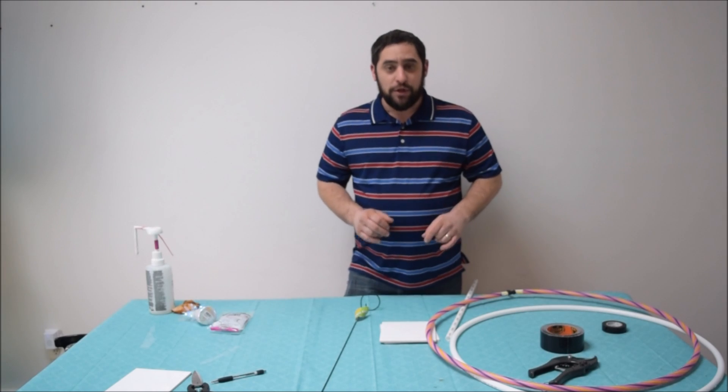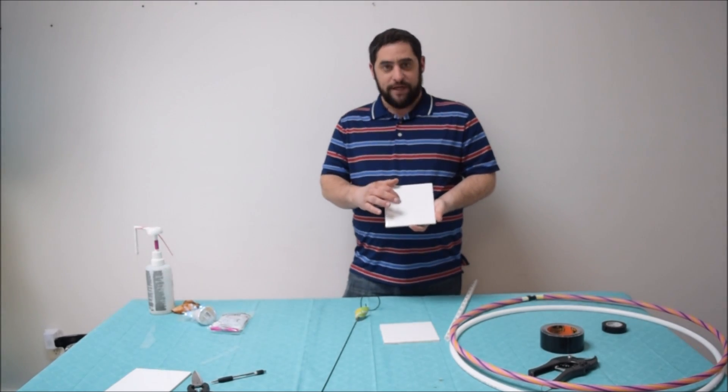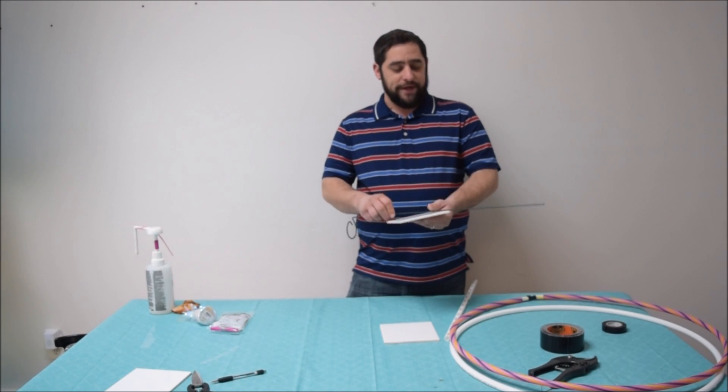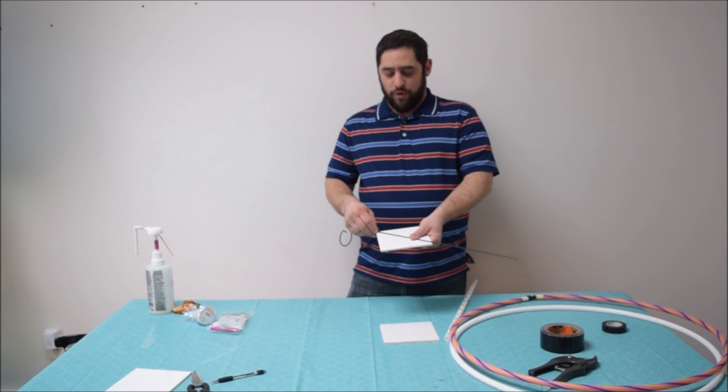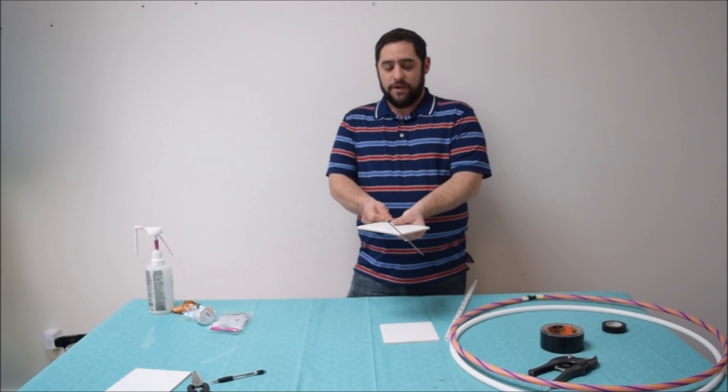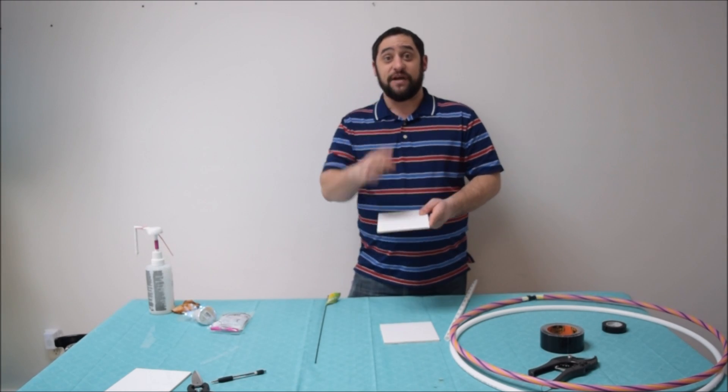First, we're gonna find our center spot on our tile. I pre-marked it already. The way you find your center is just take a ruler or any straight edge, and you go from corner to corner and mark it with a pen. Do that on this side and mark it with the pen. Then you're gonna get your X. Where that X meets is the center of the tile.